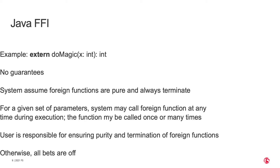The FFI is always a challenge. Generally, whatever semantic guarantees your language has go out the window when you have an FFI, because the FFI is likely to undermine them and you have no control. In our case, these look like fairly standard external declarations — external Java functions, because the system runs on the JVM — and basically all bets are off. There are no guarantees. The system assumes that these are pure functions that always terminate, but the termination guarantees don't hold if you call a Java function that doesn't terminate, and we can't control what a Java function does.